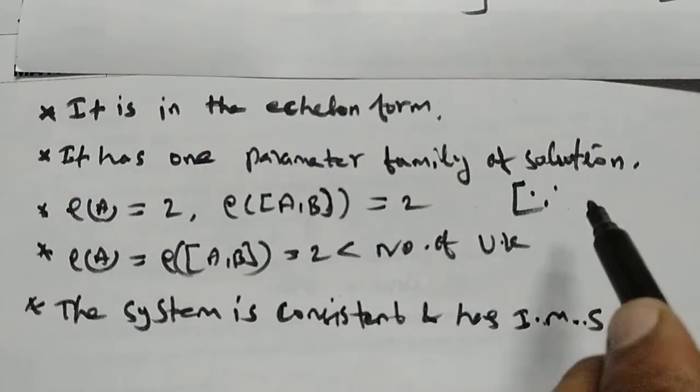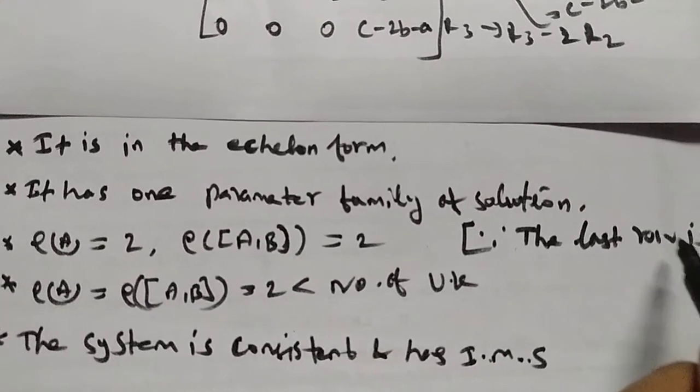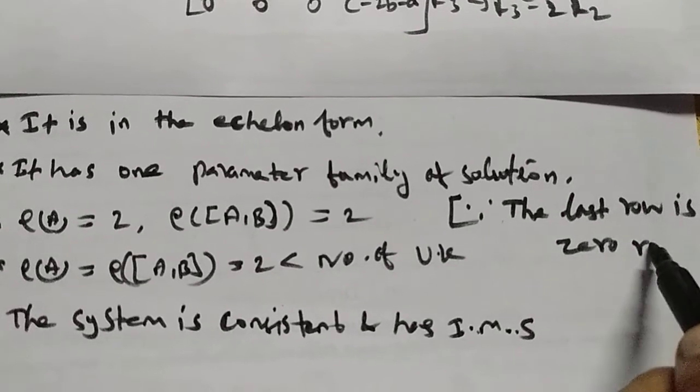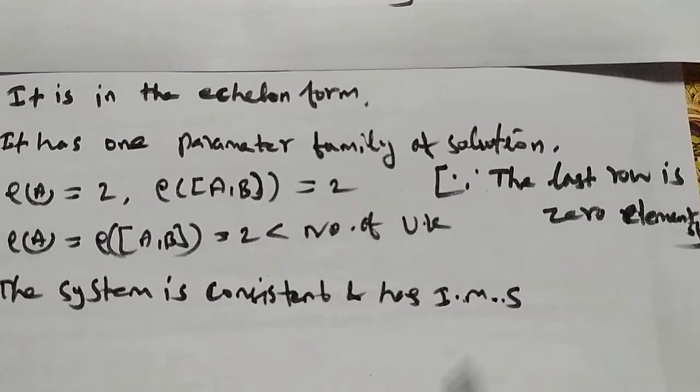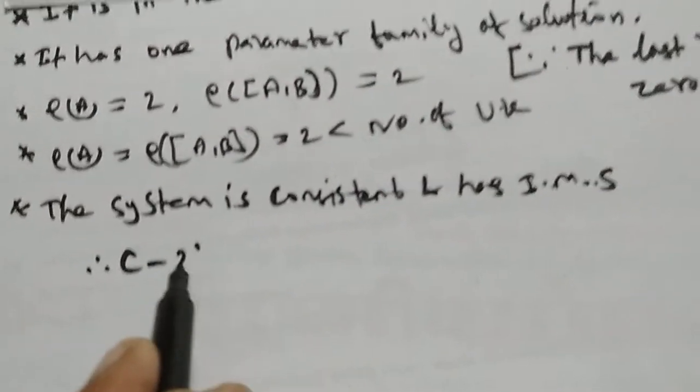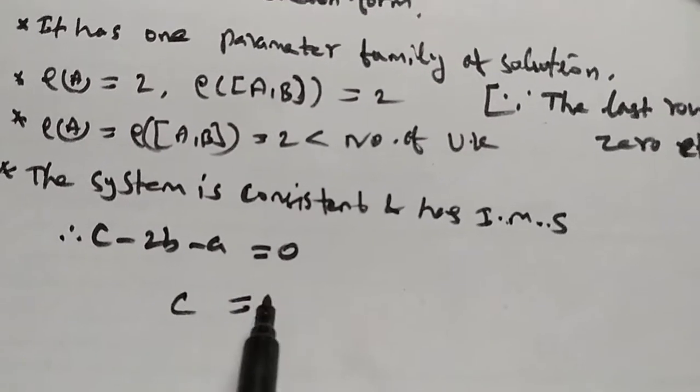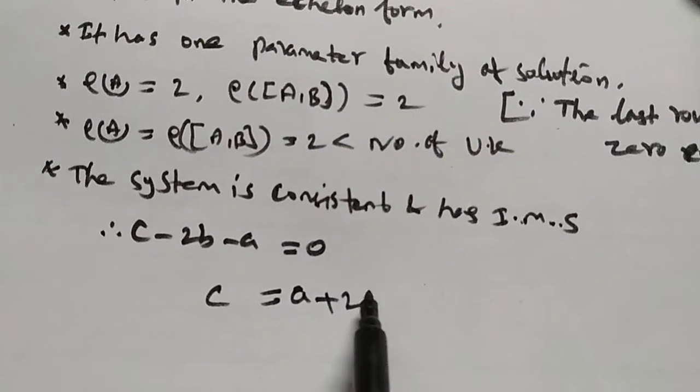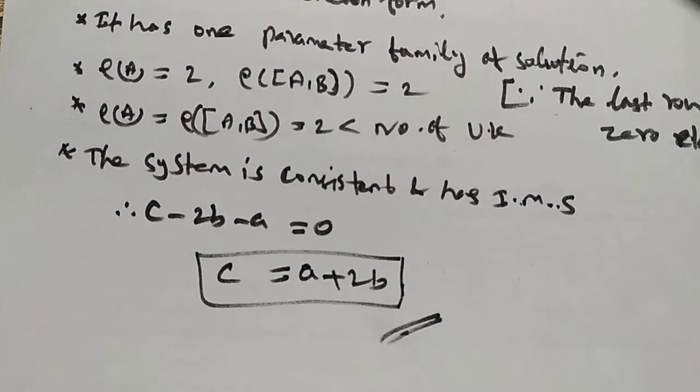The last row is zero elements, so if the last row gives zero, therefore c minus 2b minus a equals 0. Therefore c equals a plus 2b. That's the required condition. Thanks for watching.